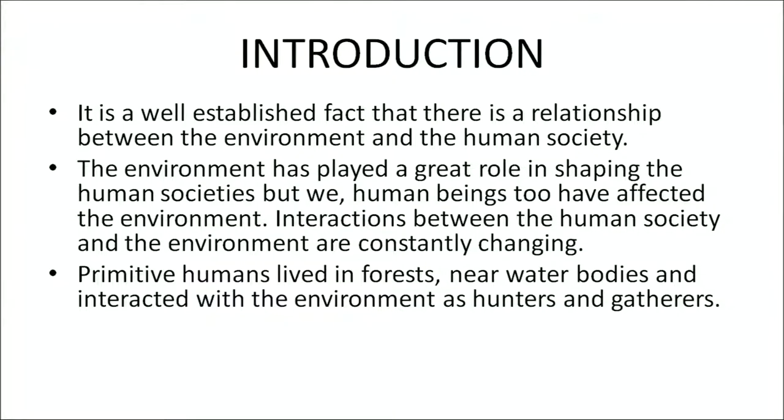It is a well established fact that there is a relationship between the environment and the human society. The environment has played a great role in shaping human societies, but we human beings have also affected the environment. Interactions between human society and the environment are constantly changing. Primitive humans lived in forests, near water bodies, and interacted with the environment as hunters and gatherers. Human beings, scientific name Homo sapiens sapiens, evolved more than 2 million years ago with a large brain that enabled them to think and use judgment. Humans walked erect on two legs, which made their hands free for manual functions.